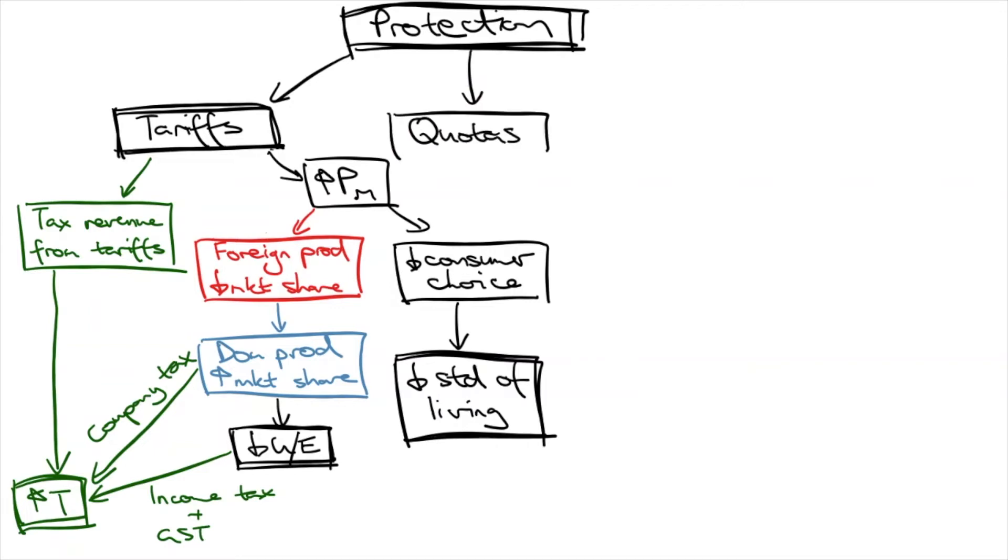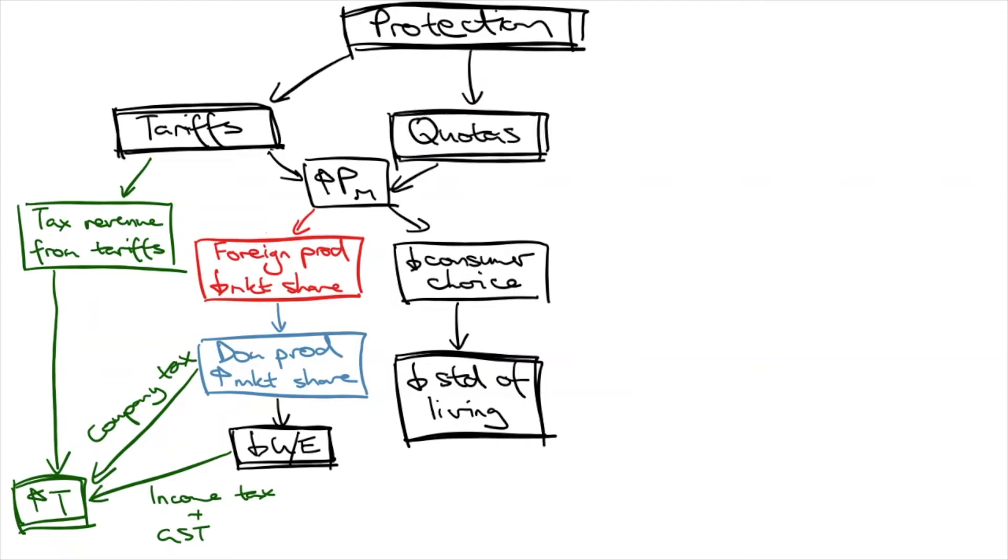Next, let's look at quotas. Quotas are limits on the amount of imports. By restricting the supply of imports, the price of imports will again increase. The effects are identical to those of tariffs, so the diagrams look very similar. The world price is raised, the imports are reduced, domestic producers expand the supply and increase revenue, leading to increased domestic employment.